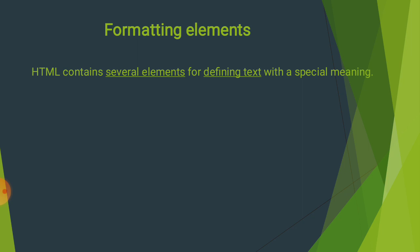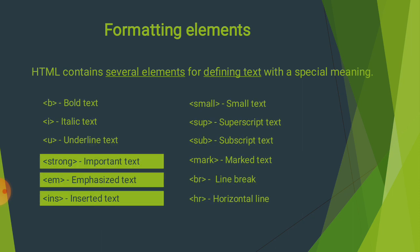HTML contains several elements for defining text with a special meaning. HTML के अंदर बहुत सारे elements हैं जो text को अलग define करने के लिए, special group से mention करने के लिए उपयोग होते हैं — जैसे कि b tag, i tag, u tag, strong tag, em tag, ins tag।